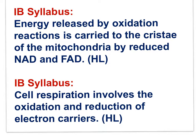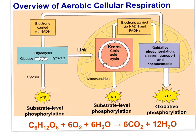Cell respiration involves the oxidation and reduction of electron carriers. NADH and FADH2 are mobile electron carriers, but in the ETS there are also stationary electron carriers — electron carriers embedded in the inner membrane of the mitochondrion. NADH and FADH2 carry electrons held in high energy orbitals to the electron transport system, moving this potential energy to the ETS. The ATP formed at the ETS is formed by oxidative phosphorylation, and another term introduced here is chemiosmosis.